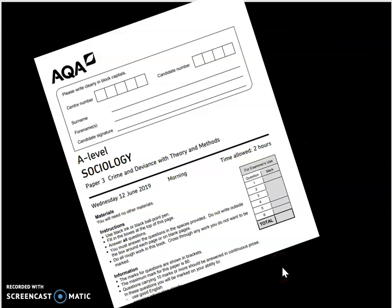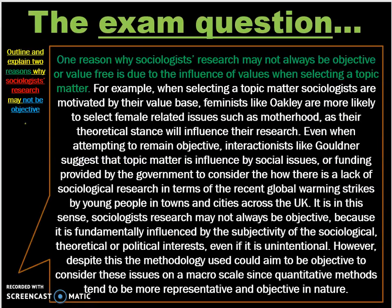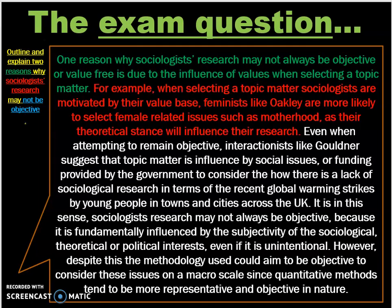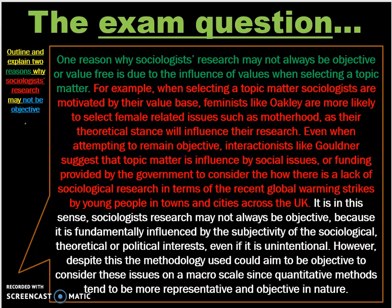So how do we go about structuring an answer? I'm drawing upon a student example from paper 3 from 2019. This student has written a very chunky paragraph which should take around seven to eight minutes to write, and the first sentence is important: 'One reason why sociologist research may not always be objective or value free is due to the influence of values when selecting a topic matter.' She has started using the wording from the question and clearly stated the first reason, applying two examples — feminists such as Oakley and her study of motherhood, and interactionist Goldner and the influence of topic matters by social or political influences.